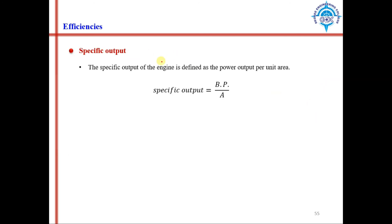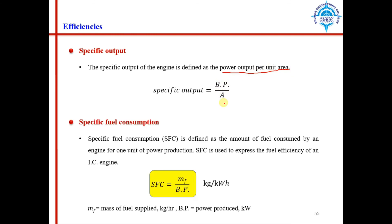Specific output is the power output generated per unit area, given by brake power divided by area. Specific fuel consumption is how much fuel is required to generate one unit of brake power, given by Mf divided by brake power. It is used to express the fuel efficiency of an IC engine.